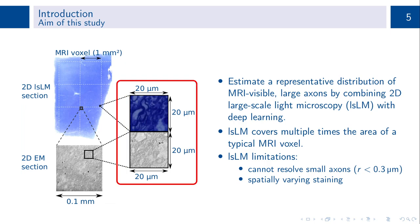However, the comparison of small subsections resampled to the same resolution illustrates the limitations of LSLM. Due to its point-spread function, LSLM cannot resolve small axons with a radius of 0.3 microns or less. Additionally, the contrast and overall image quality is deteriorated by the staining, whose intensity varies spatially across sections.